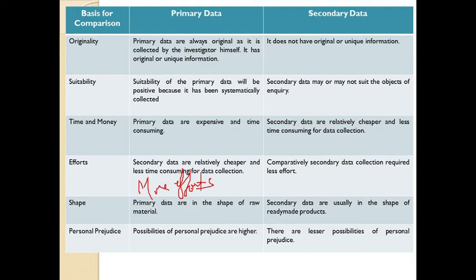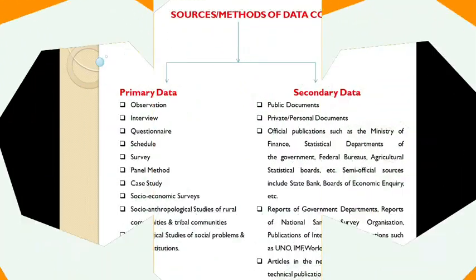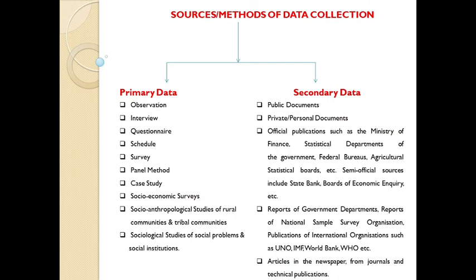Regarding shape: primary data are in the shape of raw material, whereas secondary data is in the shape of ready-made products. The possibility of personal prejudice is higher in secondary data and less in primary data. Primary data can be collected through observation, interview, questionnaire, schedule, survey, panel method, case studies, socioeconomic and socio-anthropological studies. Secondary data can be collected from public documents, private personal documents, official publications such as ministry of finance, statistical departments, federal bureaus, agricultural statistical boards, semi-official sources like state banks, government department reports, NSSO reports, publications of international organizations such as UNO, IMF, World Bank, WHO, and articles in newspapers, journals, and technical publications.